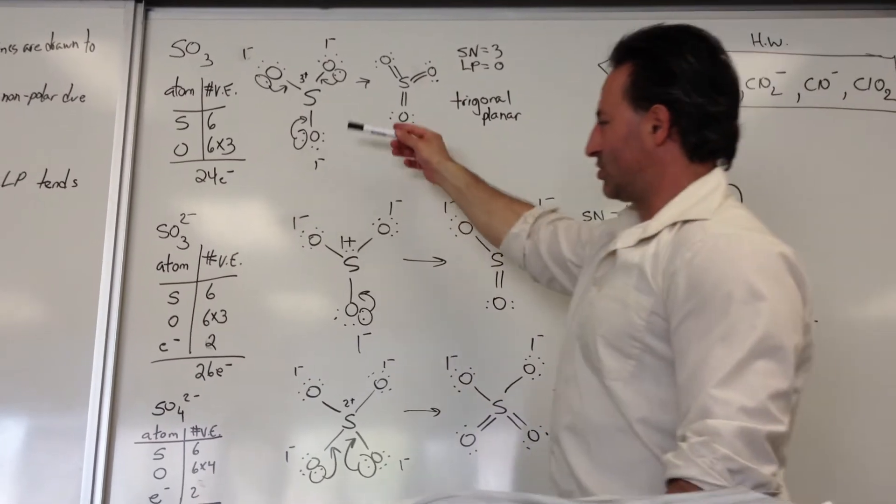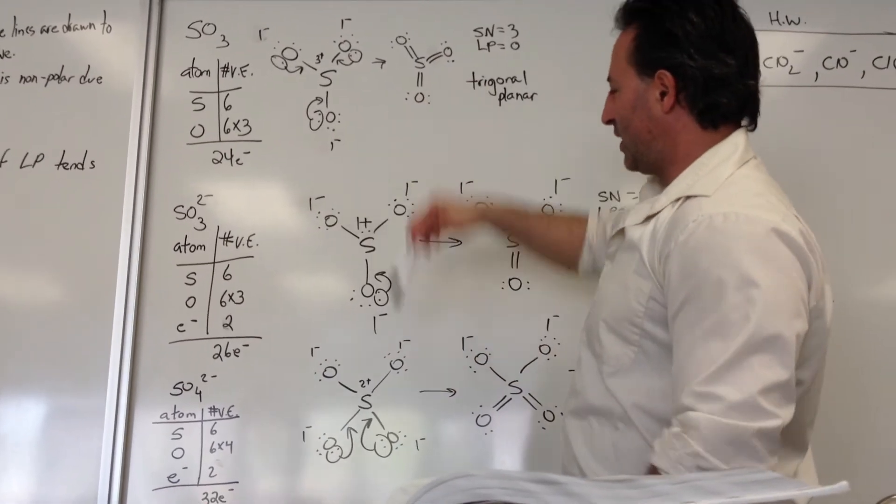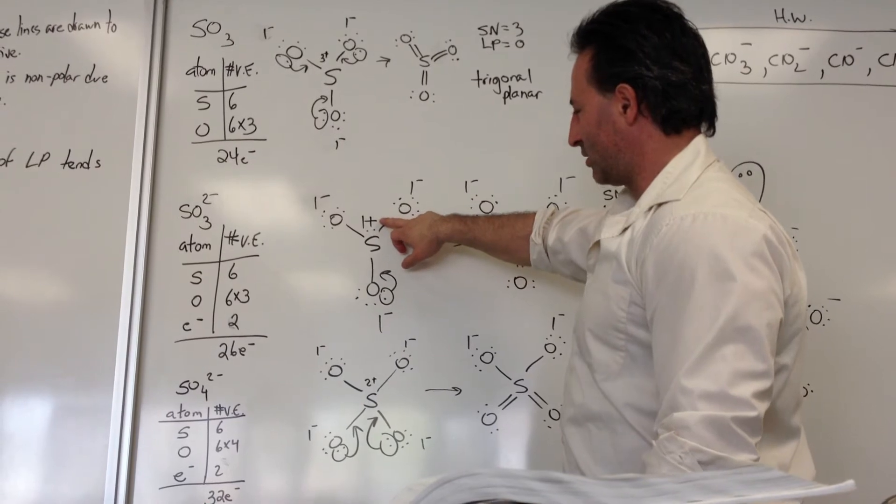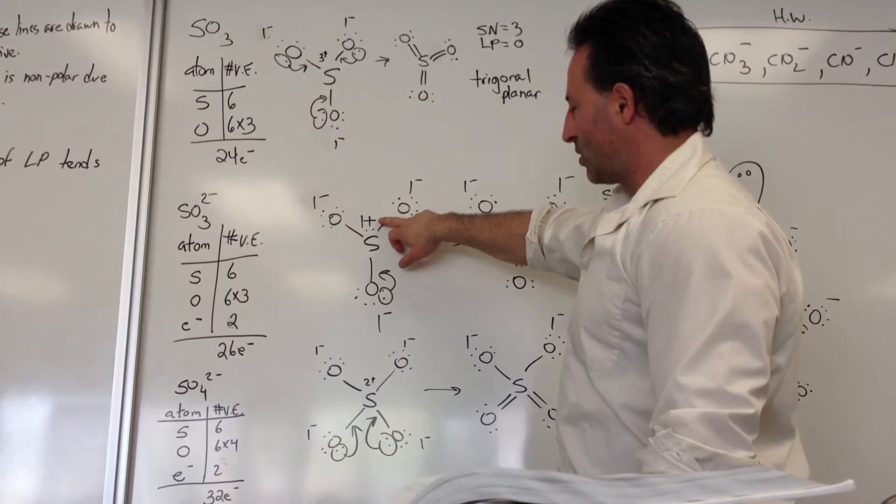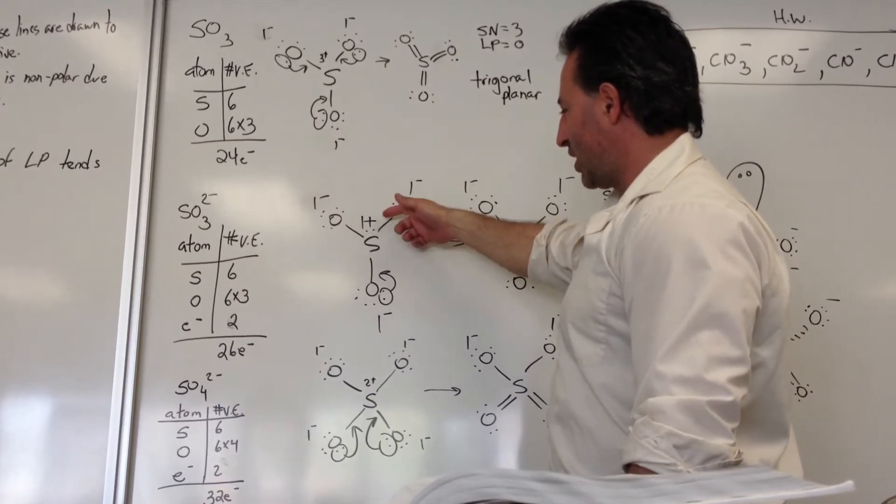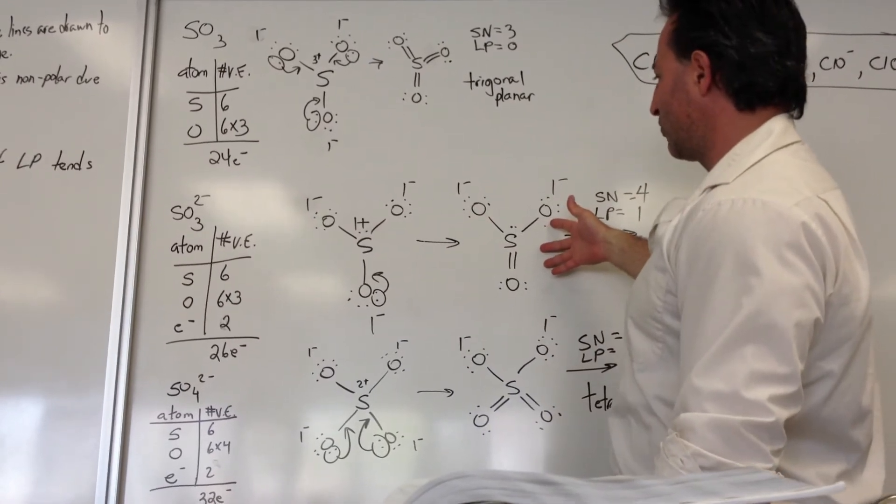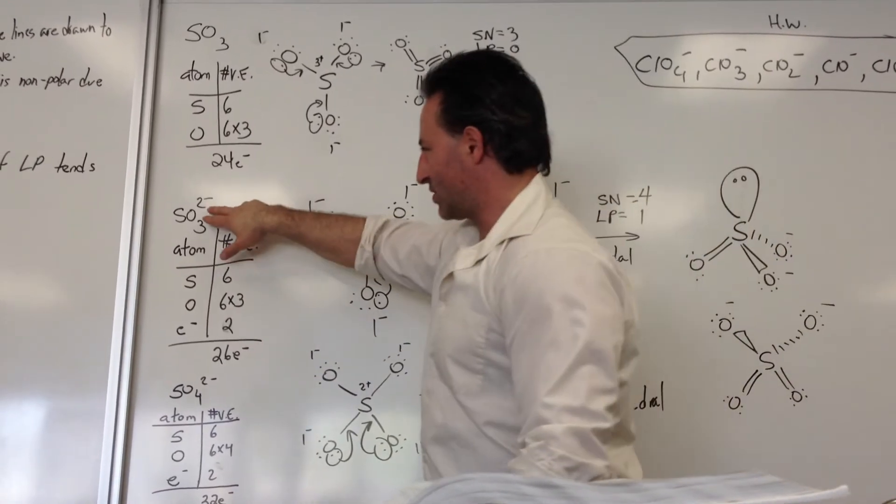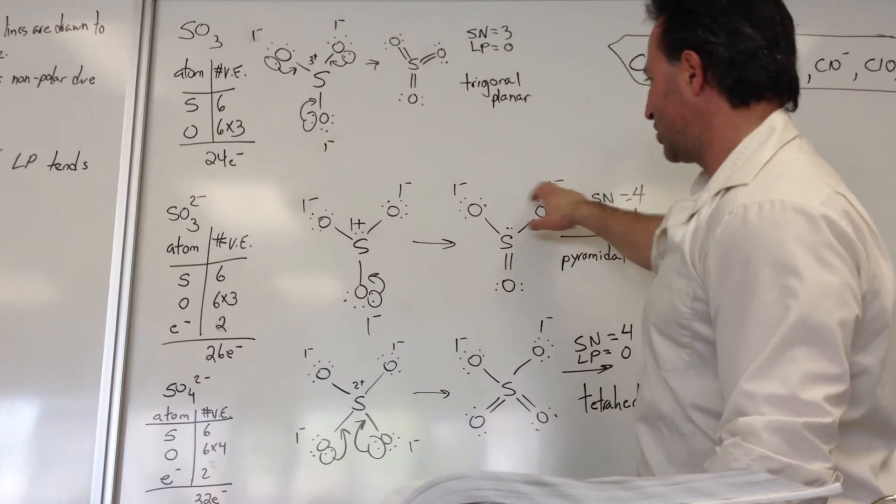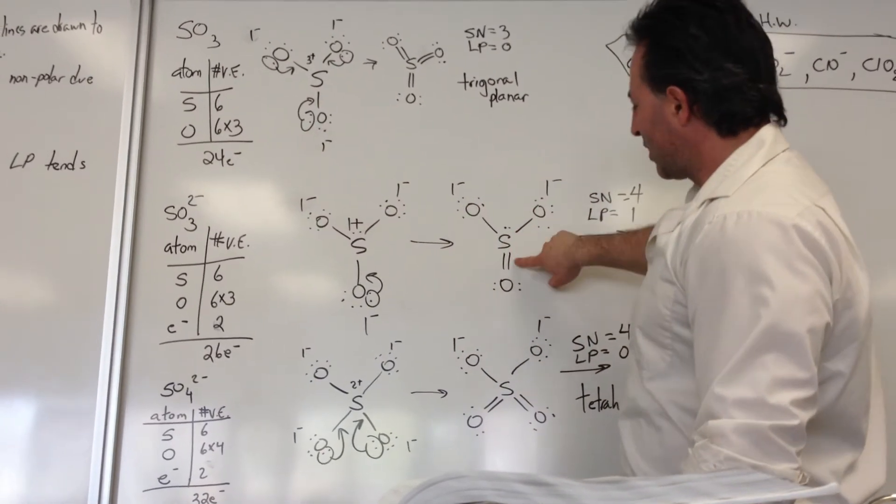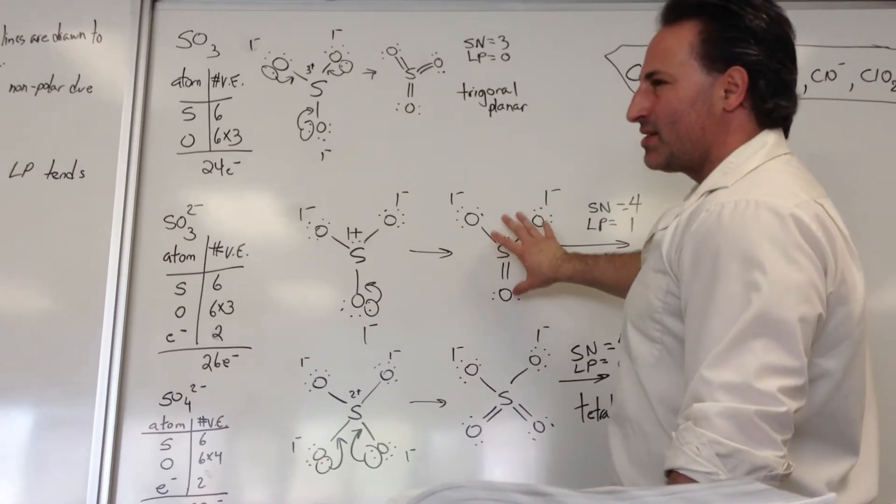When you draw through all the Lewis structures, and you account for the fact that there are formal charges, you redraw the structure to diminish the formal charges. Keeping the count of, for example, sulfite anion would have a negative 2 charge. You end up with some double bonds, but that doesn't affect the steric number.